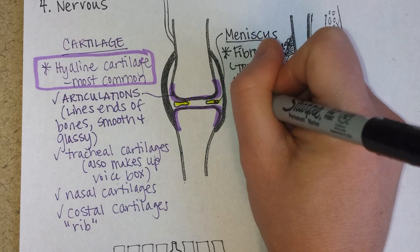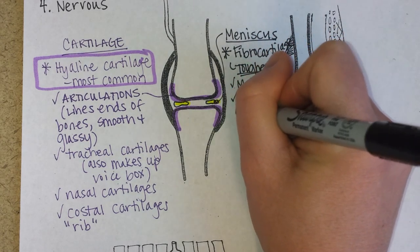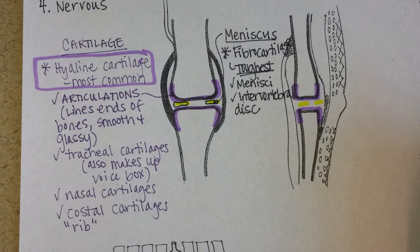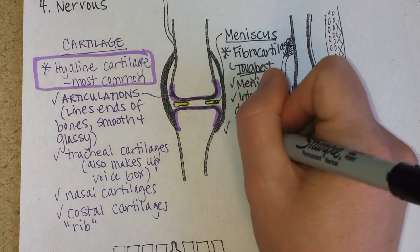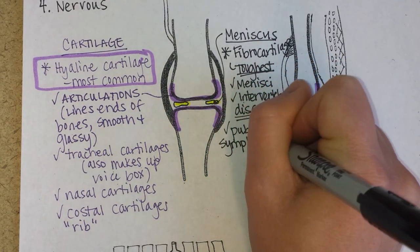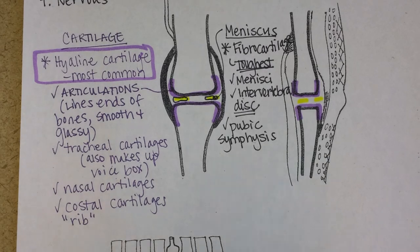Also, in between each of your vertebrae is something called an intervertebral disc, and that is made of fibrocartilage. It has a pulpy interior, and if you've heard of someone herniating a disc, they have damaged a piece of fibrocartilage. The other place you find fibrocartilage is the pubic symphysis, where the anterior part of your pelvis is held together. If it were to come apart, the two sides of the hips could actually move freely — it's really painful. That can happen in someone who has had a lot of pregnancies.